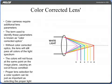Color cameras require additional lens parameters. The term used to identify these parameters is known as color-corrected optics. Without color-corrected optics, the lens will still pass all colors of the light spectrum. However, each of the colors will not focus at the same point on the image plane, causing an out-of-focus condition. Proper lens selection for a color system can be just as important as selecting the proper light source.